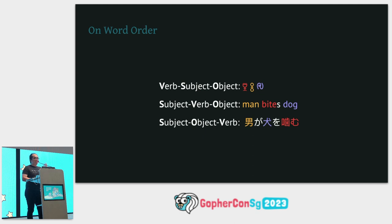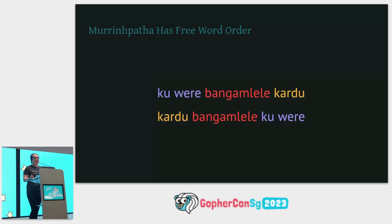I bring this up because there's an Australian language called Marinpatha in which there is no word order, so the sentence equivalent to 'man bites dog' and 'dog bites man' can mean the same thing. The semantics of Marinpatha is highly context-driven. By the way, Marinpatha means good language, strong language.